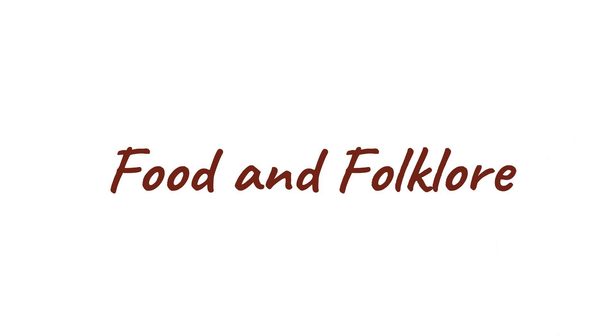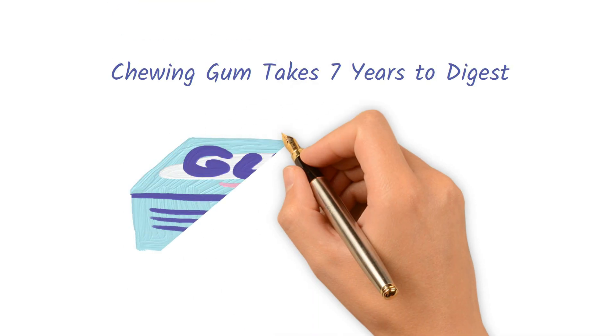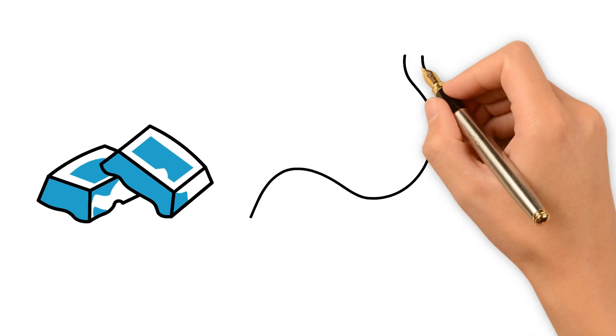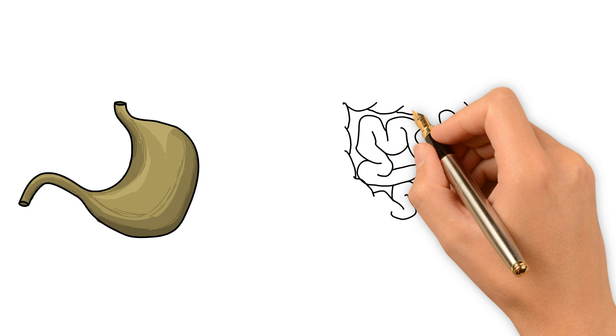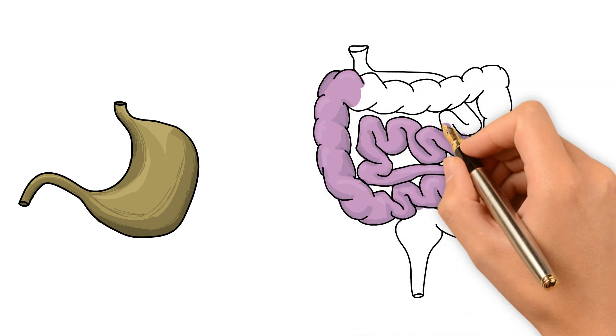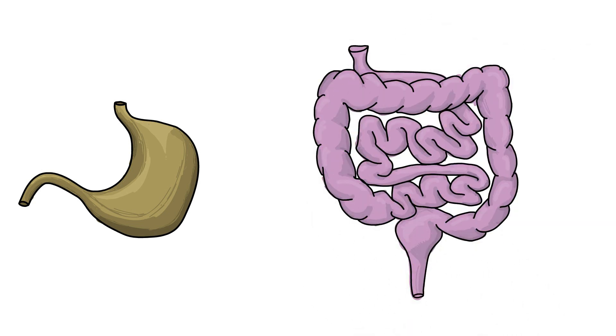Food and Folklore: Chewing gum takes 7 years to digest. Gum isn't digestible, but it passes through your system in a day or two, not years. Our bodies can't break down the gum, but it's soft enough to move through the digestive tract without causing problems.